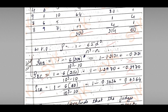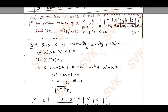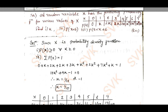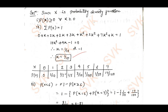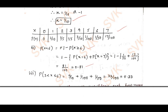Moving to the next question — the random variable problem. I discussed this in the previous video but am just giving the solution: you need to get the value of k as 1/10. Substituting that value in the tabulation gives a table, from which we find probability of x < 6 is 0.81, and x between 3 and 6 is 0.33.